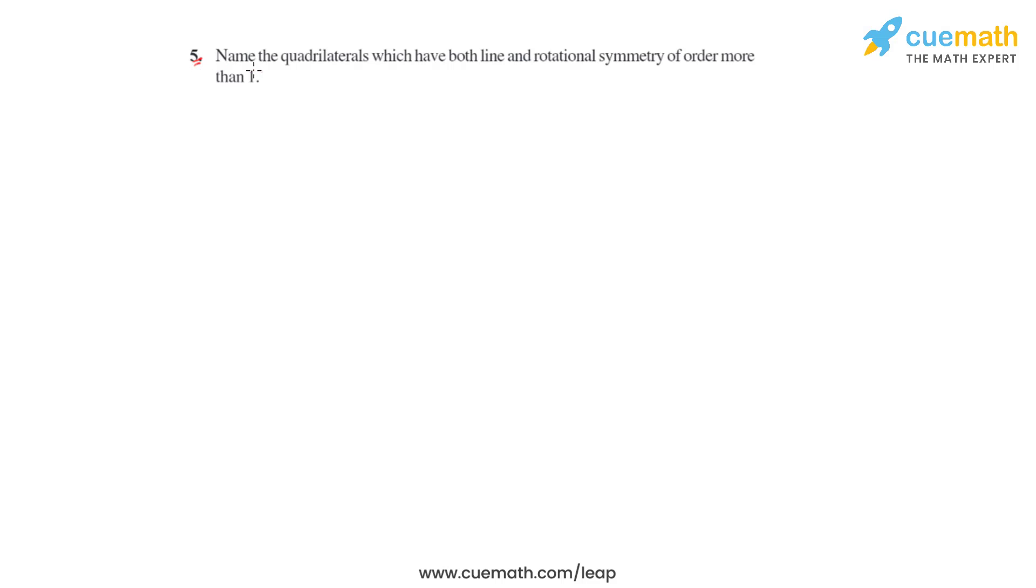Question number five of this third exercise asks us to name the quadrilaterals which have both line and rotational symmetry of order more than one. So the quadrilaterals which will have both line and rotational symmetry of order more than one is a square.